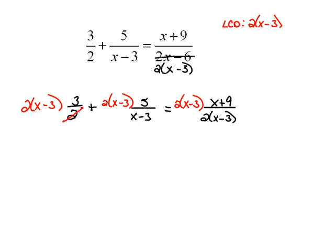Alright, now in our first term, our 2's will cancel. So, we're left with x minus 3 times 3, which would be 3 times x minus 3.